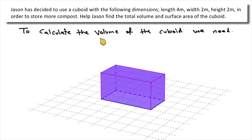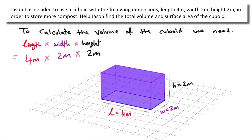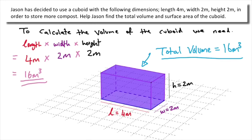To calculate the volume of the cuboid we need the length, the width and the height. We have a length of 4 meters, a width of 2 meters and a height of 2 meters. So the volume is 4 meters times 2 meters times 2 meters, which gives us a total of 16 meters cubed.